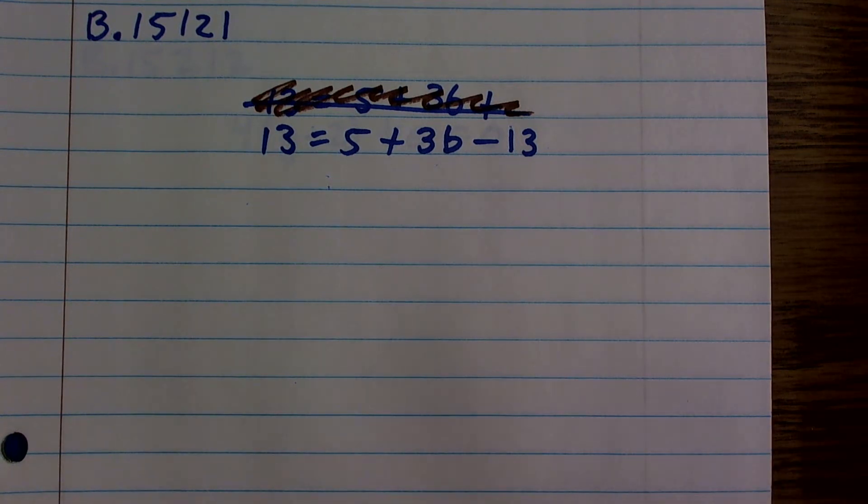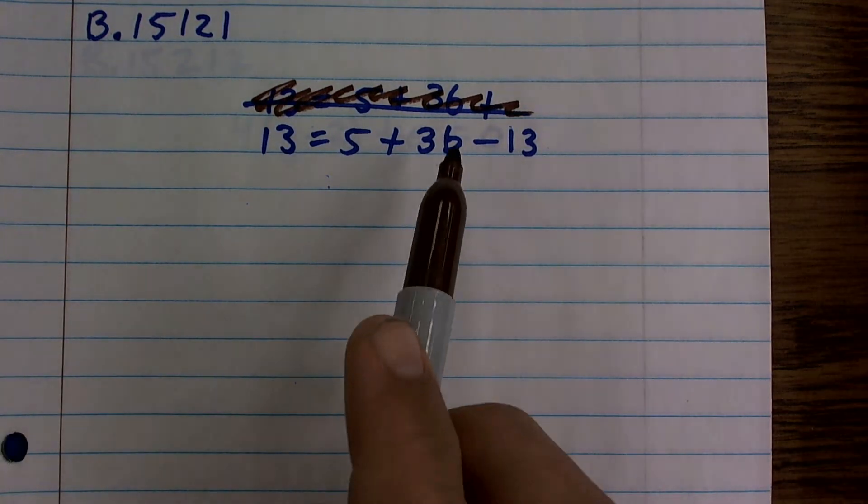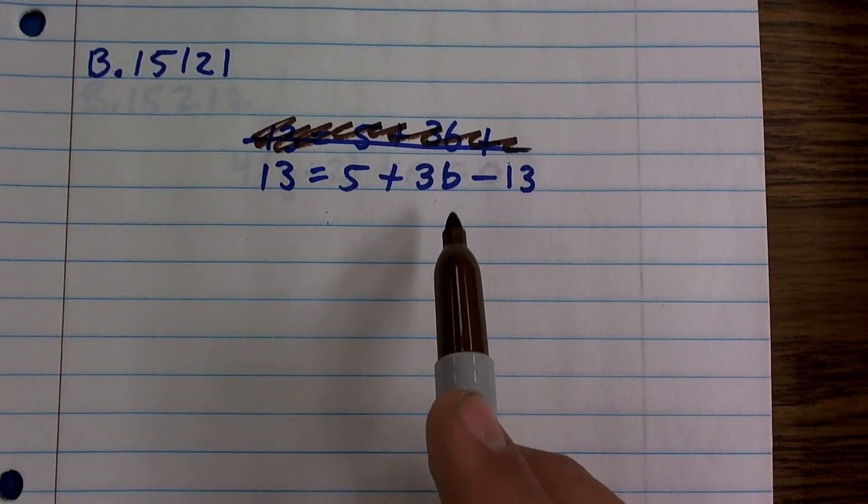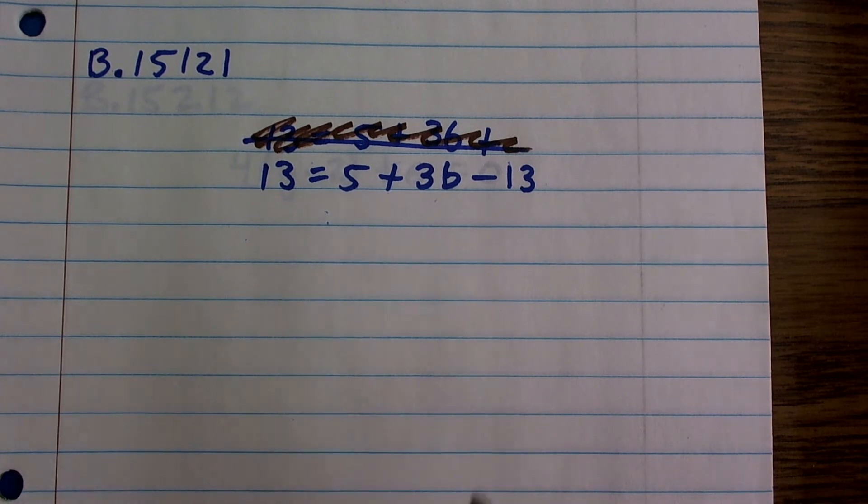Now, before we worked with two variables, and we were able to just combine the like terms for the variable and then solve. Well, here we're still looking pretty good, right? We have only one variable, so that's cool.